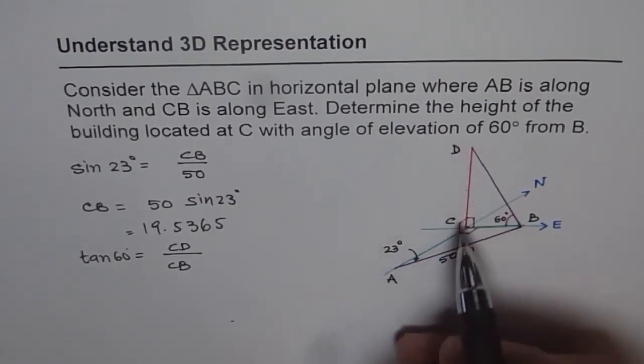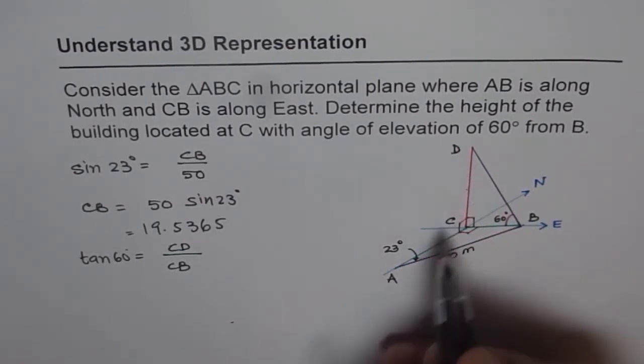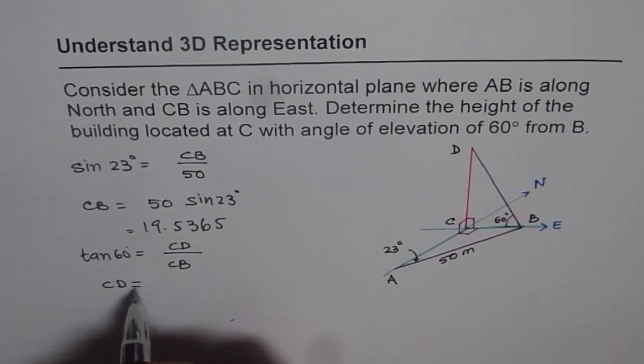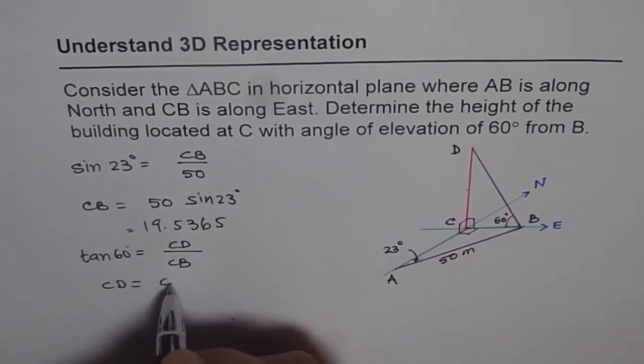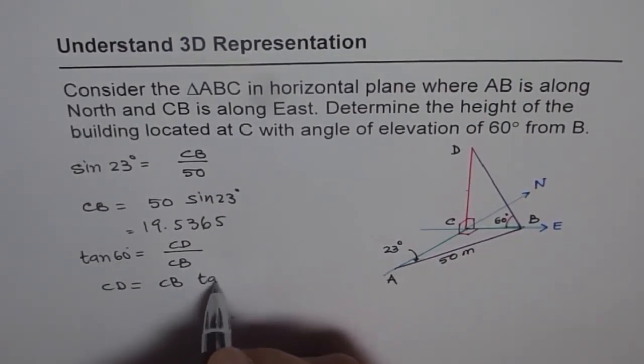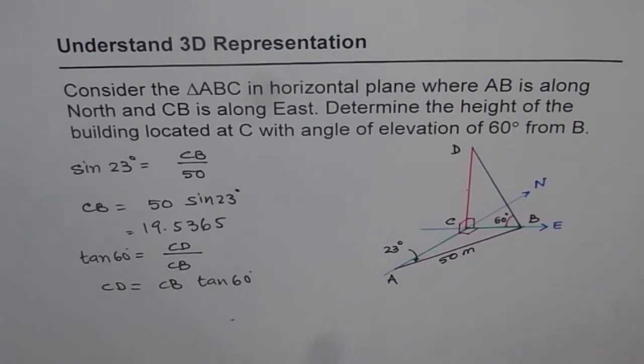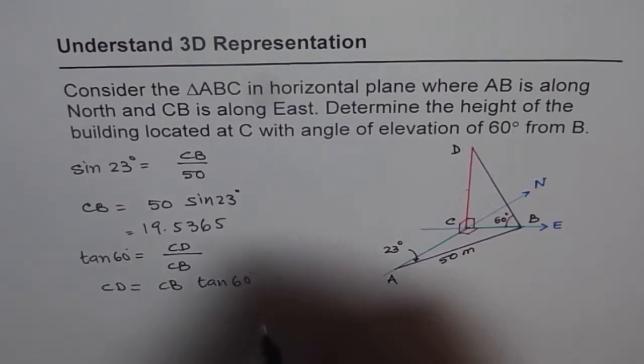Now, from here, we can find the height CD. So CD is equal to CB times tan of 60. CB is, let's write CB first, times tan of 60 degrees. So that is how we can find the height of the building.